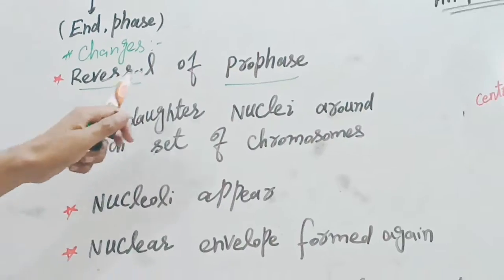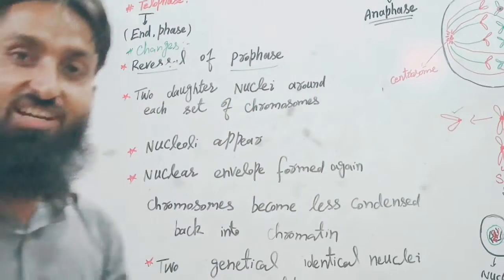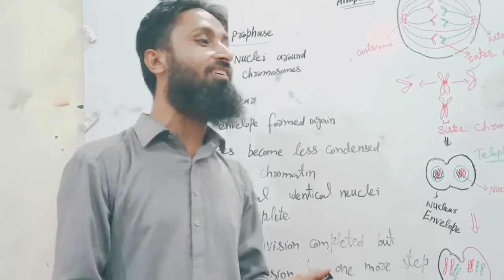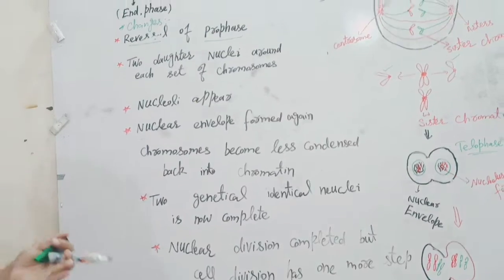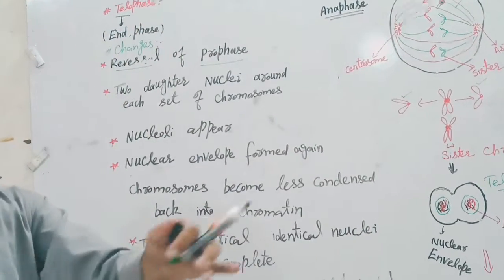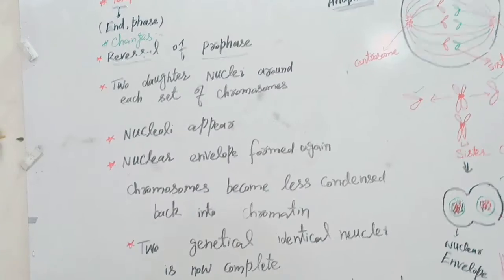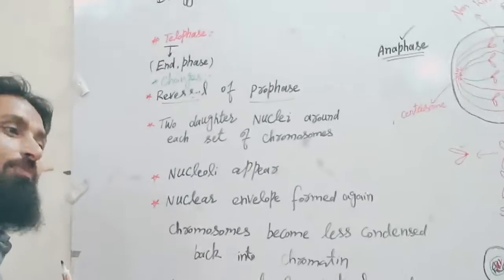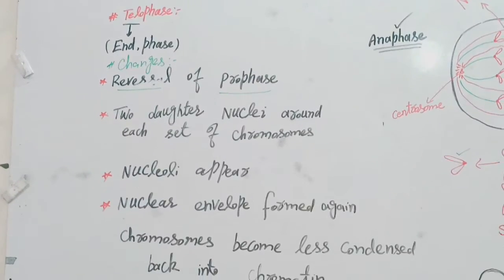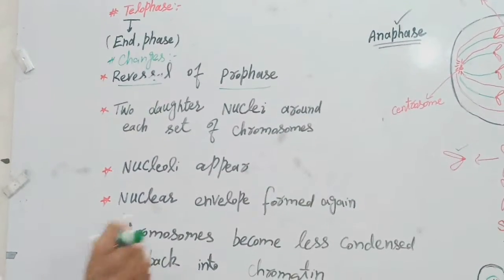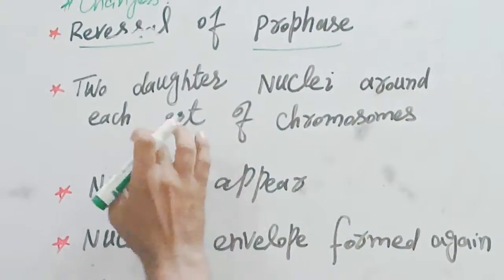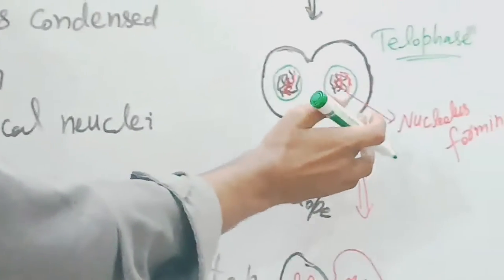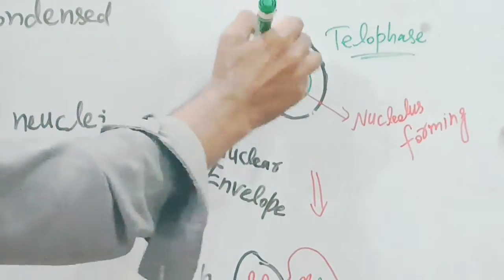We now have two dark nuclei around each set of chromosomes. Look at these two circles — they represent the nuclear envelopes forming around each group of chromosomes.